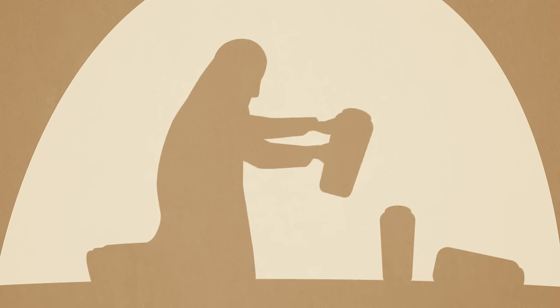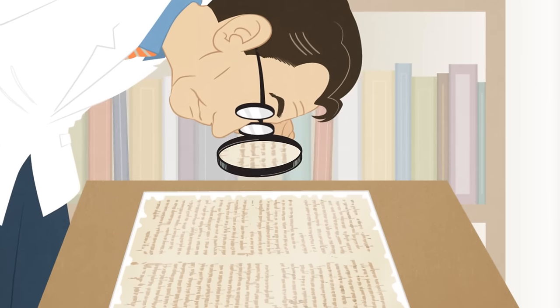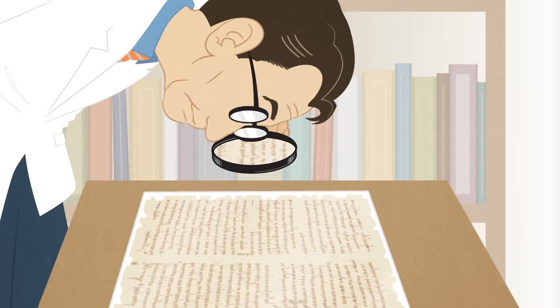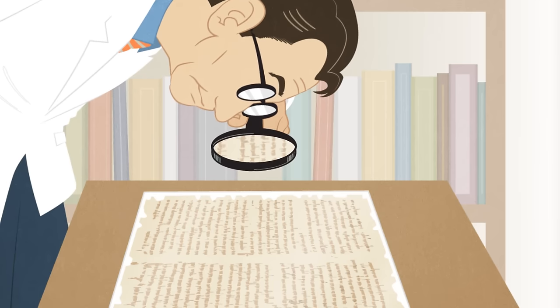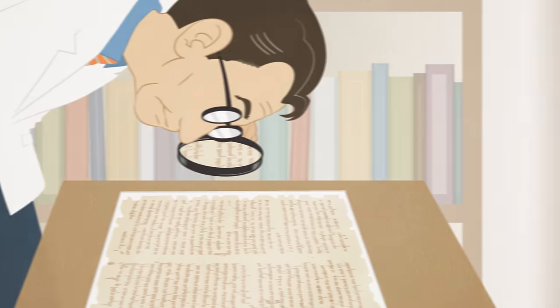Back in the 1940s, a shepherd boy found some old scrolls in a cave near the Dead Sea in Israel. When scholars were finally able to take a look at the scrolls, they were able to determine how old the scrolls were by doing two things.